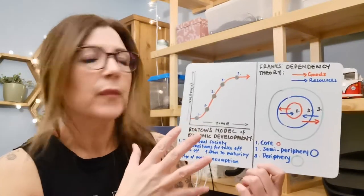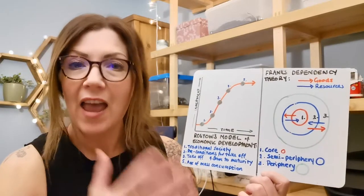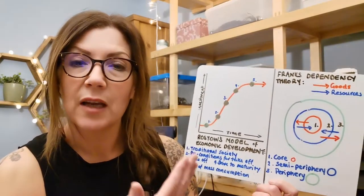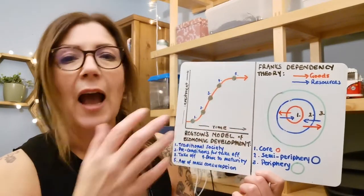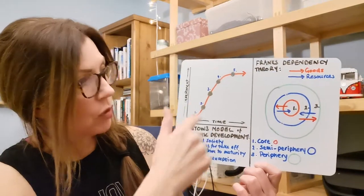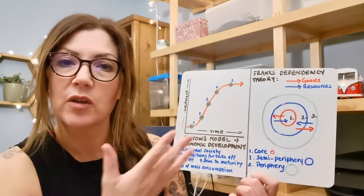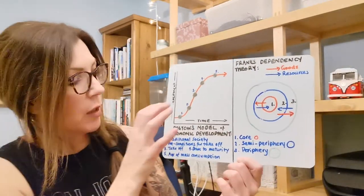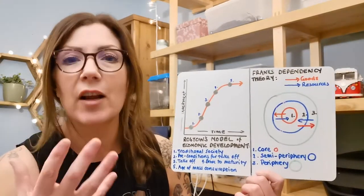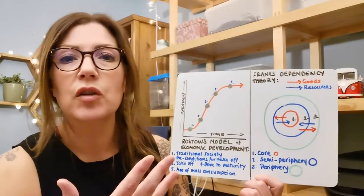So Rostow's model talks about how every single country can go from underdeveloped low income to high income, and it's just a matter of following five stages. His model talks us through these five stages which I'm going to go over with you now. It assumes that every country is able to do this. This is the kind of prerequisite, that each country can do this freely.